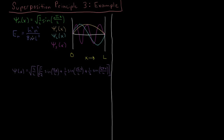So whatever particle we're talking about, we have to pick a mass. Whatever box we're talking about, we have to pick a width for it. But everything else is pretty much determined by this description. According to the superposition principle, we can write any general wave function, any general psi of x, as a linear combination of these individual states.